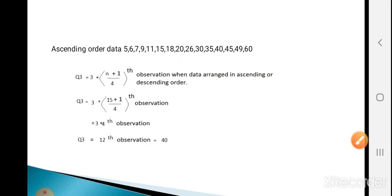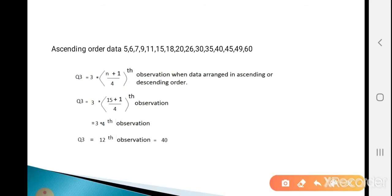Now calculate Q3. For Q3, put i equal to 3. So Q3 equals 3 times (15+1)/4 = 3 times 4 = 12th observation. The 12th observation is 40. So Q3 equals 40.